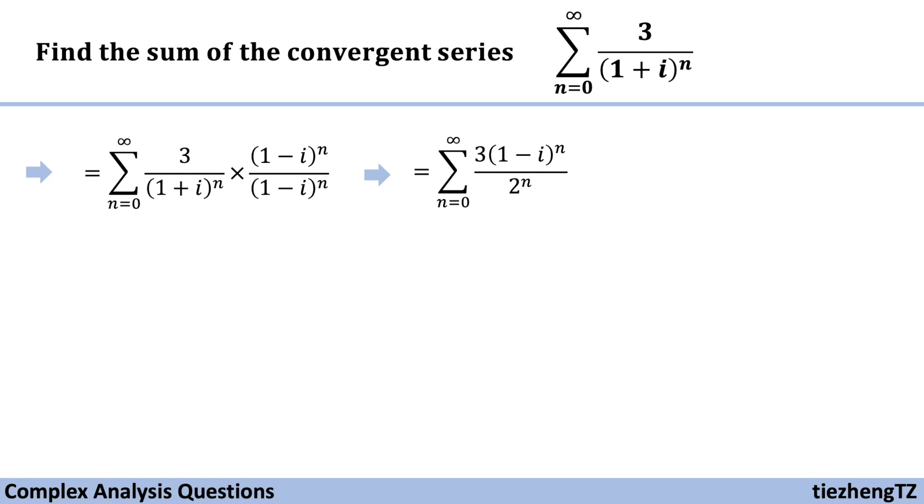And do a little bit more. We just put (1 - i) over 2 within the parentheses. And then this given function becomes sum, n starts from 0 to infinity, 3 times ((1 - i)/2) to the power of n.